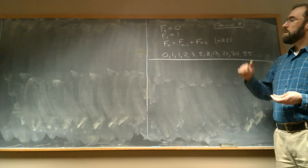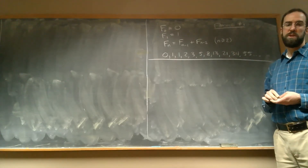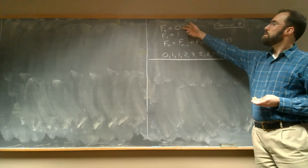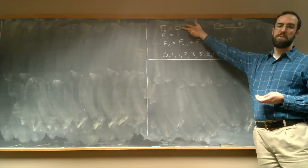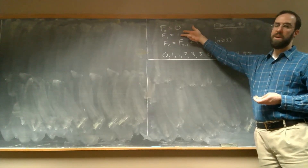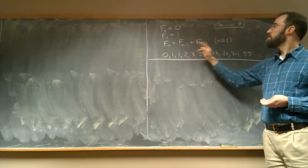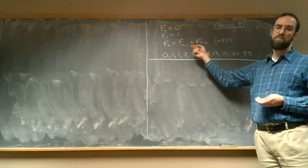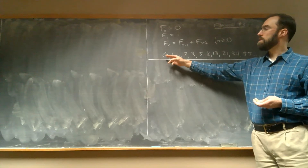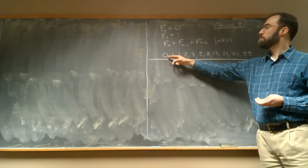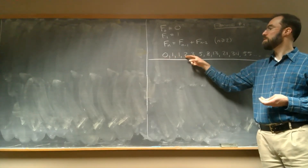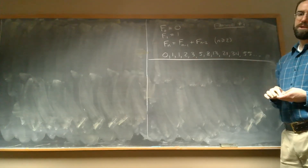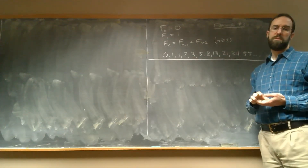Here I've got a definition of the Fibonacci numbers. The Fibonacci numbers are what you get when you start with the zeroth Fibonacci number being zero, the first being one, and then after that, for any n that's at least two, you get the nth Fibonacci number by adding up the two previous ones. So it starts zero, one, then zero plus one is one, one plus one is two, one plus two is three, and so on.